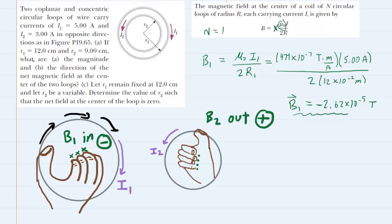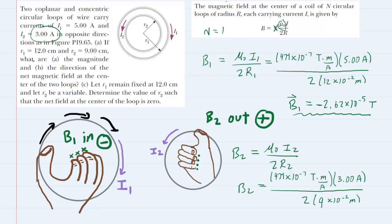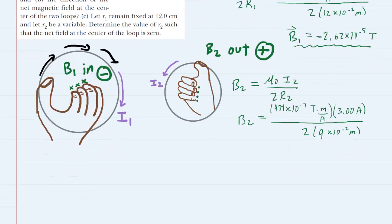We need to do the same thing with B2. We have the constant times I2 divided by 2 times R2. We multiplied by I2 which was given to be 3 amps and then the radius of that smaller loop was 9 centimeters, converted into meters by multiplying by 10 to the minus 2. B2 will turn out to be about 2.09 times 10 to the minus 5.